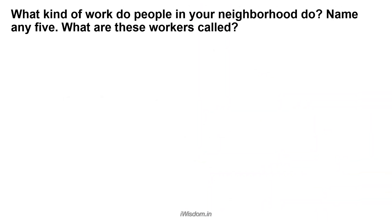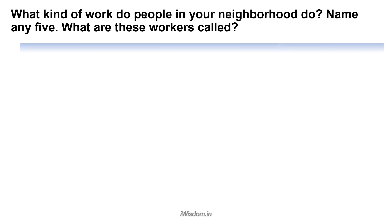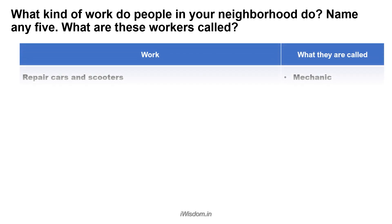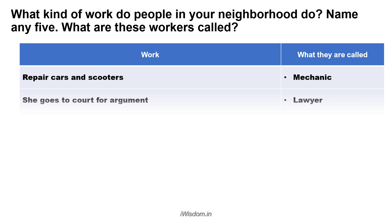What kind of work do people in your neighborhood do? Name any five. What are these workers called? I stay in an apartment and I have so many neighbors who do different kinds of work. Here is the list. The auntie staying in front of our house goes to court for arguments — she is a lawyer.